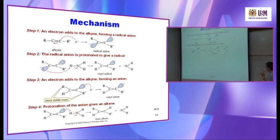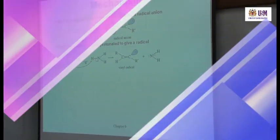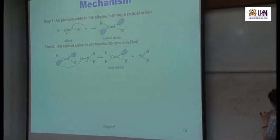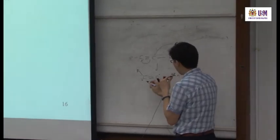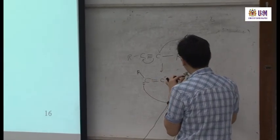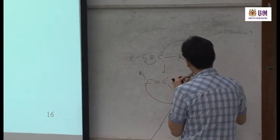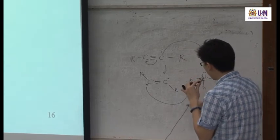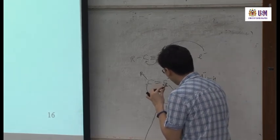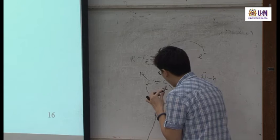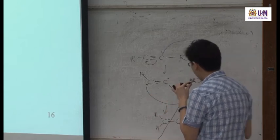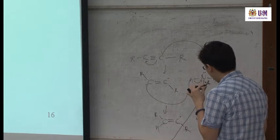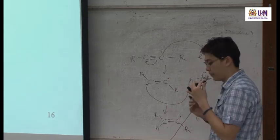Hydrogen is added here. To show this step: the lone pair attacks the H of ammonia, that N–H bond breaks. You yield a product where H is added to one carbon, R remains on the other, there is still a radical on one carbon, and NH2⁻ (amide anion) is the byproduct.